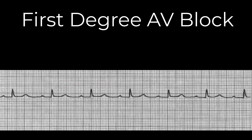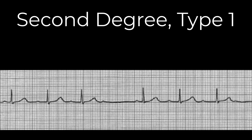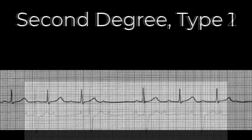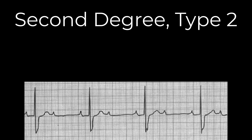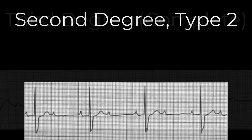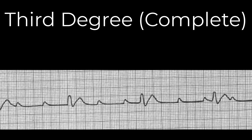To summarize: in a first-degree block, every impulse still goes through but with a slight delay — it looks like a normal sinus rhythm but with a long PR interval. In a second-degree type 1, the PR interval gradually lengthens until a QRS is dropped, and then the pattern repeats — think: long, longer, longer, dropped. With a second-degree type 2, there is no pattern to the dropped beats, but every time the AV node does its job it does so consistently, and sometimes the impulse doesn't go through at all. And finally, with a third-degree block, the AV node is no longer allowing any impulses to go through — we see regular P waves and regular QRS complexes, usually slow and wide, doing their own thing from another pacemaker somewhere low in the heart, with no connection between the atria and ventricles. This rhythm requires immediate intervention.